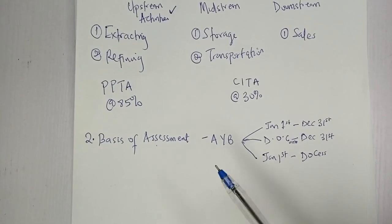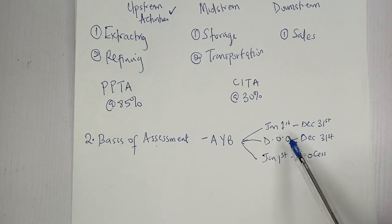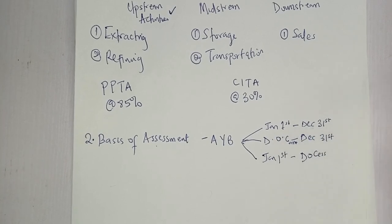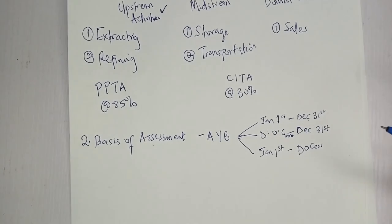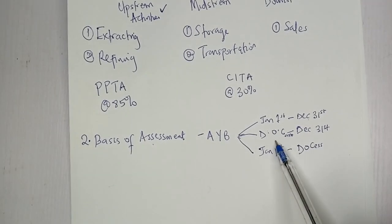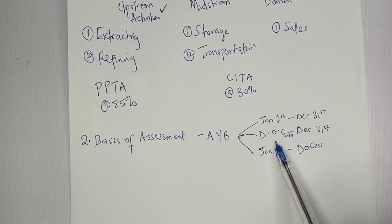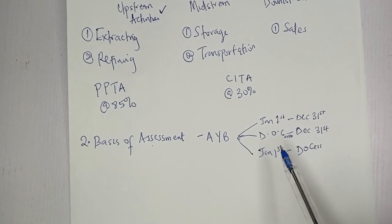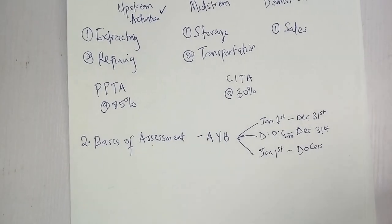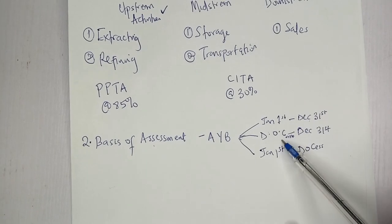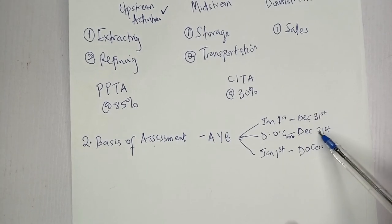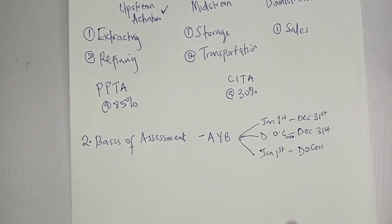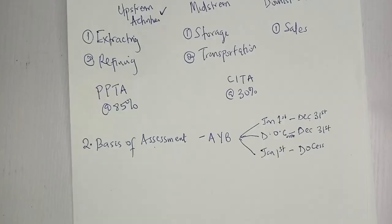The actual year basis can take three forms: January 1st to December 31st for a normal going-concern company; date of commencement to December 31st for a new company — for example, if it commences May 1st; or January 1st to the date of cessation for a company that is winding up.